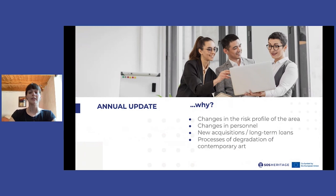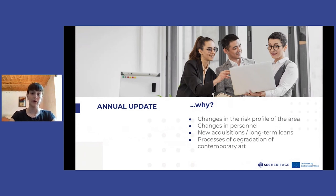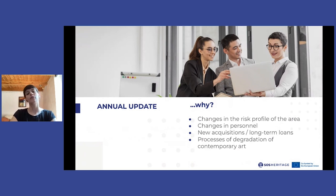Furthermore, consider the speed with which the collections of a museum change or are enriched. Every change in the overall condition of the museum must be the starting point for a survey of risks and of one's ability to respond to it. So for these reasons it is very important that the emergency plan is updated at least once a year. Some reasons include changes in the risk profile of the area, serious disasters in that area, changes in personnel, new acquisitions or new long-term loans in the collection, or unpredicted processes of degradation of contemporary art.